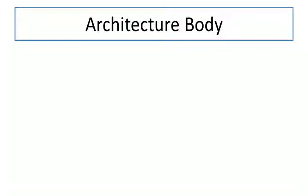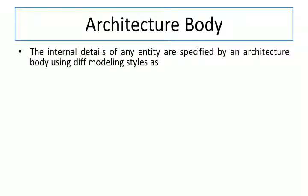In this segment we will discuss about the second basic terminology called architecture body. In the previous lecture we saw how to declare entity terms, which are nothing but defining the relationship between input and output. Now let us look at architecture. The internal details of any entity are specified by an architecture body.